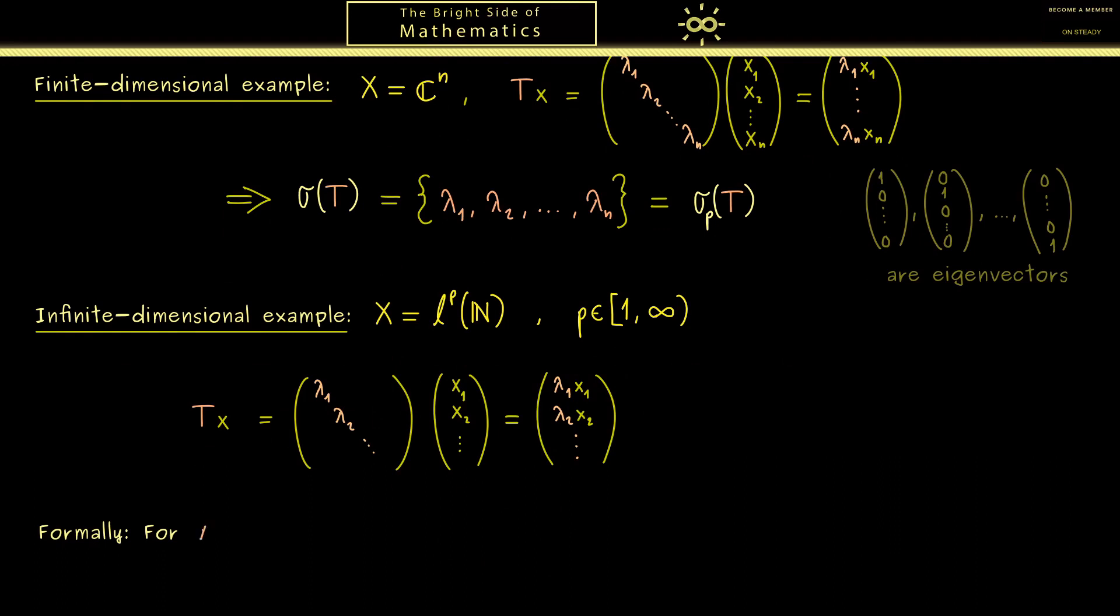But of course we really should state the formal definition of the operator T. So we take complex numbers lambda₁, lambda₂ and so on, with the property that they form a bounded set. And this can be stated that the supremum of the absolute values is finite.